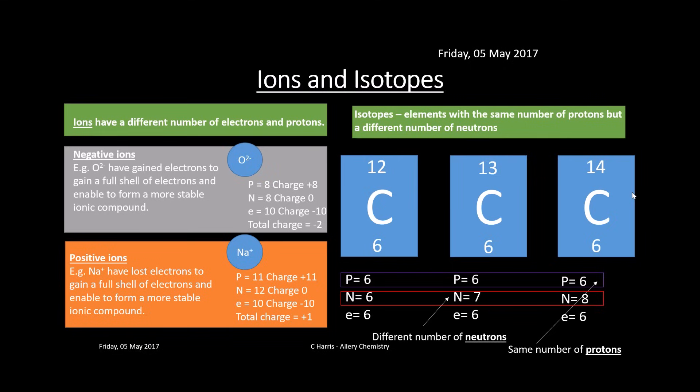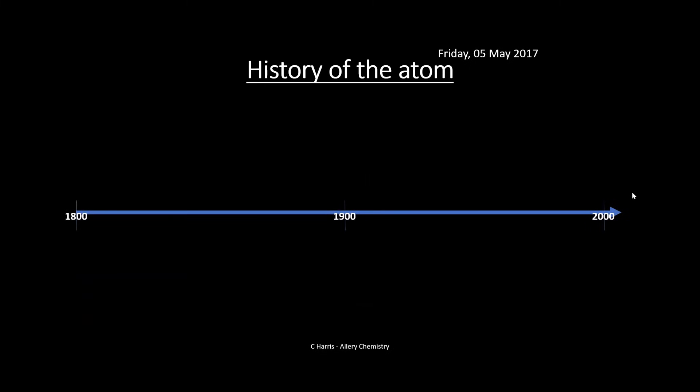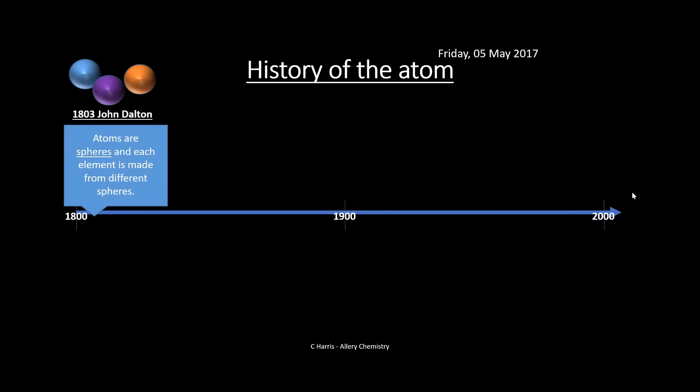Isotopes chemically react the same way because they have the same number of electrons, but they have a slightly different mass. Now we need to know a little bit about the history — this is the fun bit.